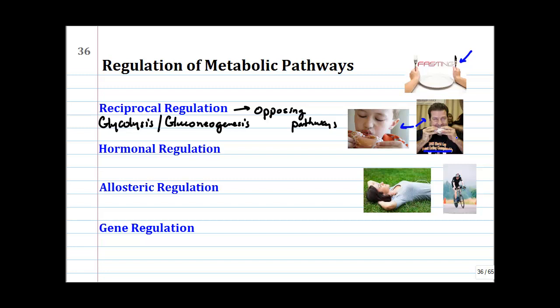Then we'll get into hormonal regulation, and a lot of this depends on our blood sugar level. Certain hormones are secreted at different times depending on whether you have low or high blood sugar. Insulin is secreted in response to high blood glucose, and glucagon is secreted — both from the pancreas — in response to low blood glucose. The other example is epinephrine, or adrenalin.